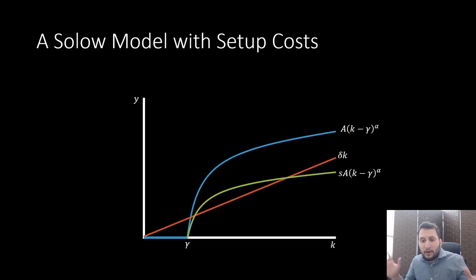So this is what our Solow model with setup costs looks like. I just want to show the visual for what it has here where you have this gamma term which is going to be an input requirement that we have before production could even begin.